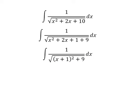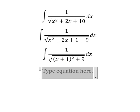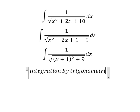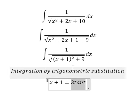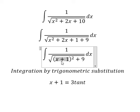Next we can use integration by trigonometric substitution. So I will set x + 1 equal to 3 tan(t), because if I put this in here we have 9 tan²(t).